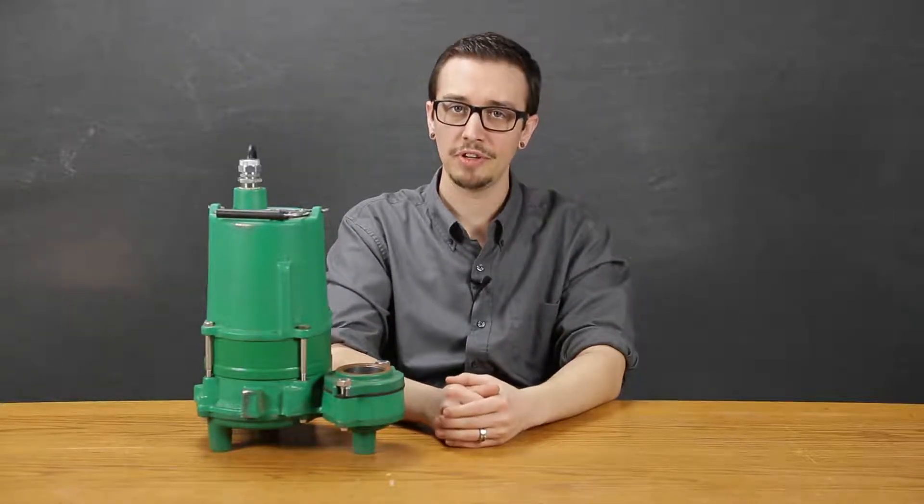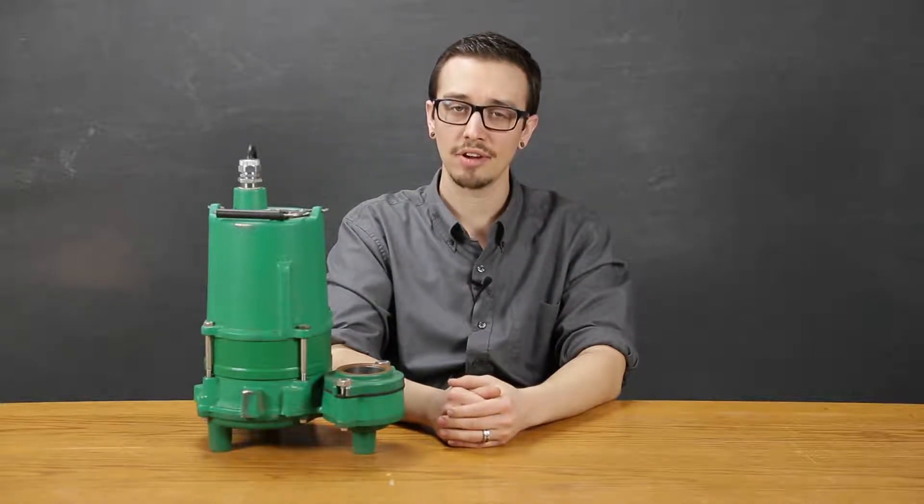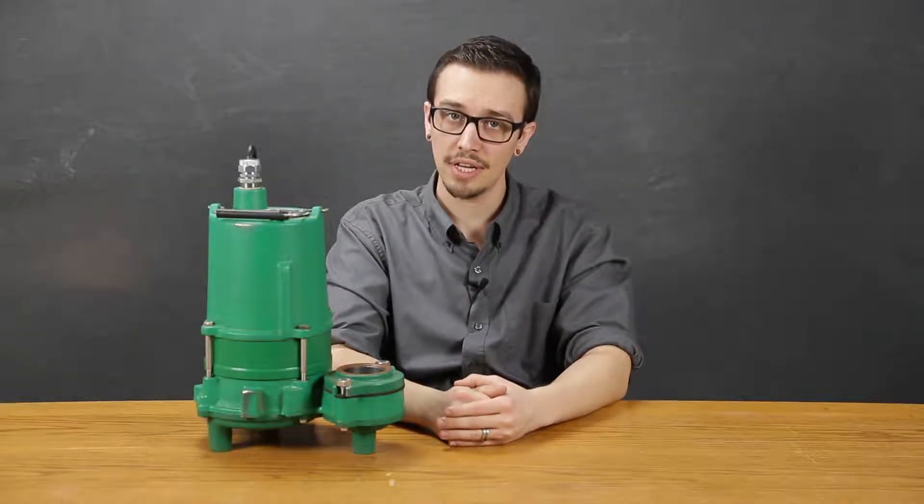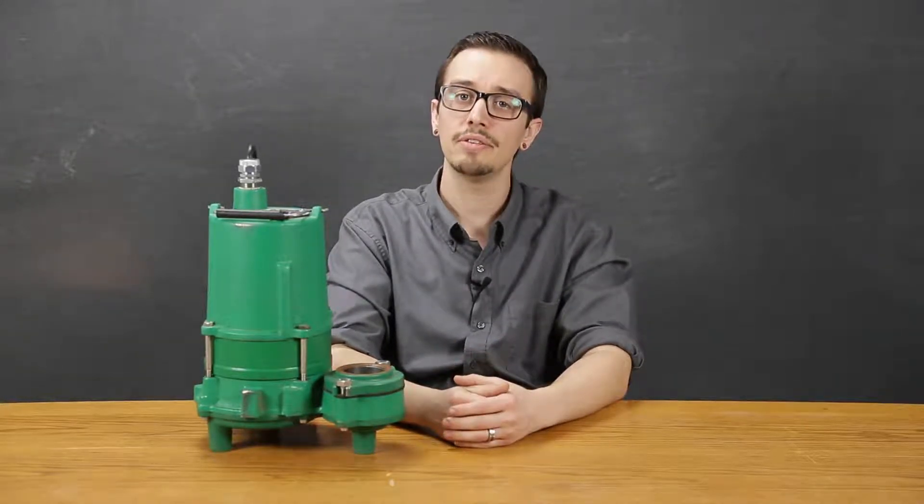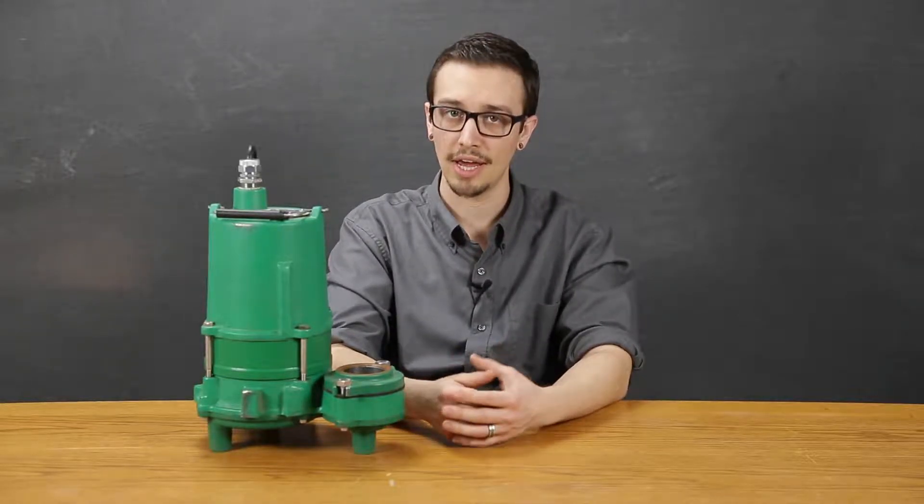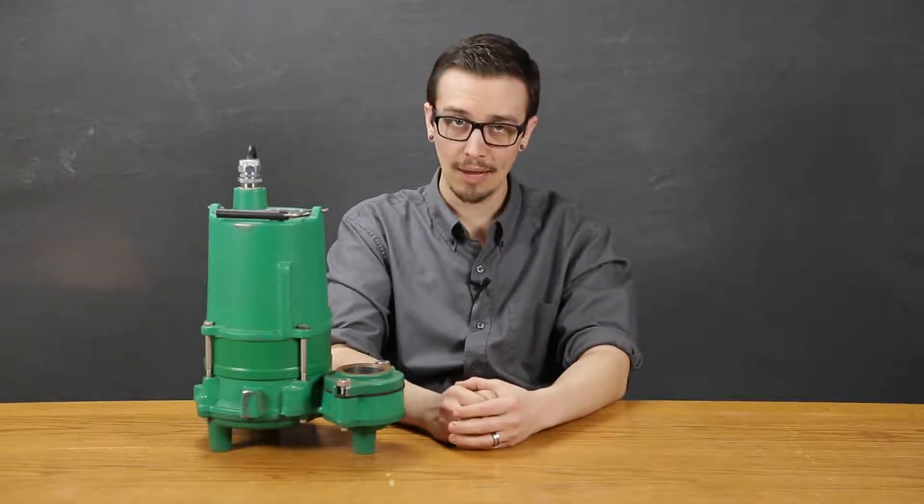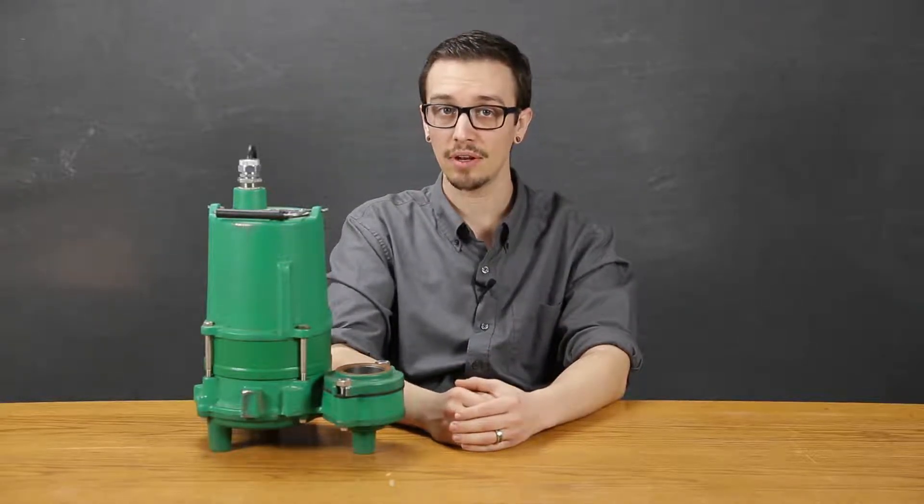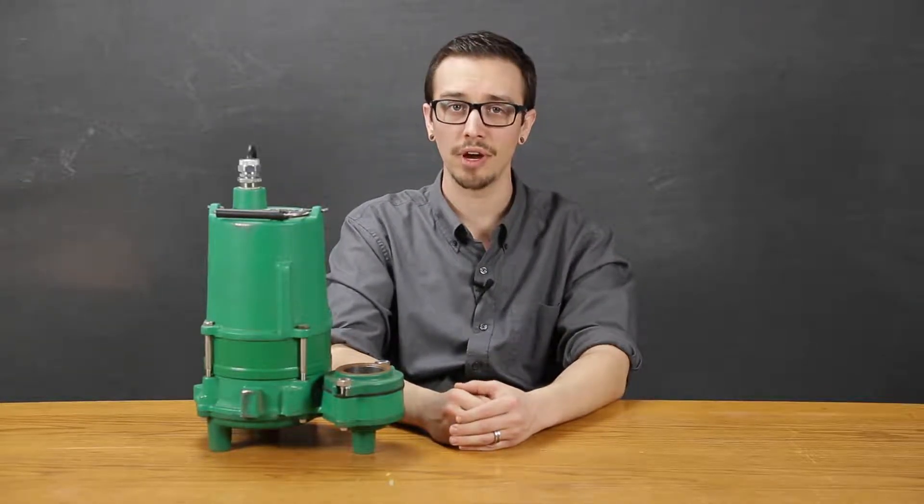This particular pump series features class 30 cast iron construction from top to bottom and because of the relatively high silicon content in cast iron, it has an inherent ability to resist subscale and oxidation, such as rust and corrosion. In addition to this, a water-reducible alkaline enamel paint is applied to these pumps, which is a robust paint that holds up to the harshest of environments.